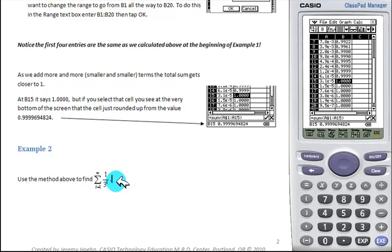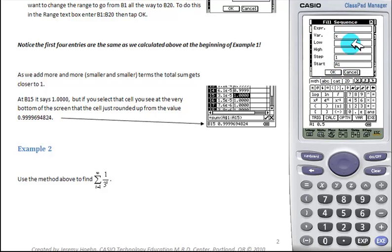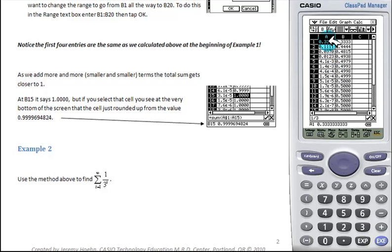The second example we ask the students to do on their own is the sum of 1 over 3 to the i. You can just change your first sequence here to be from 1 over 2 to the X to be 1 over 3 to the X. Tap OK. And everything changes for us. And we see that our sum actually starts heading towards 0.5.